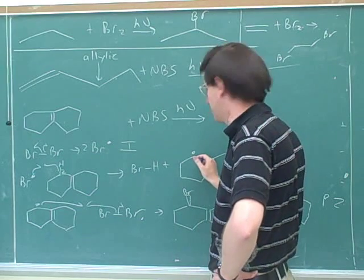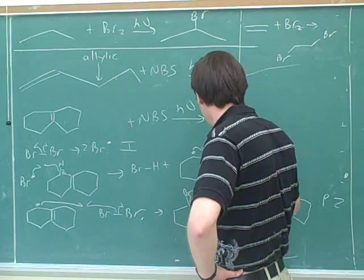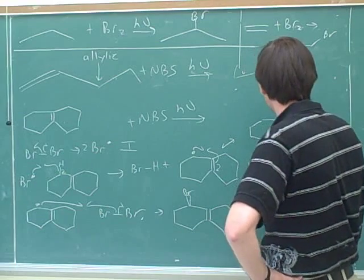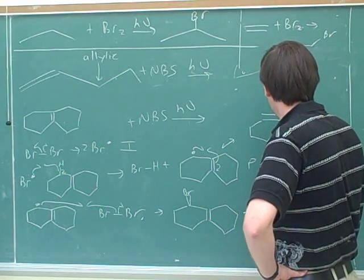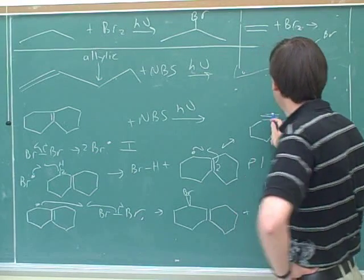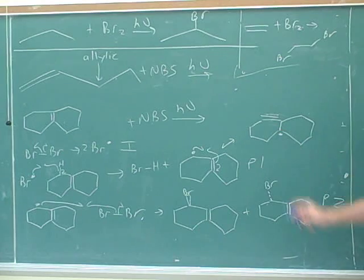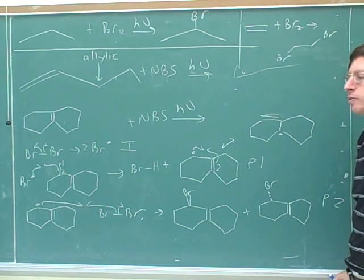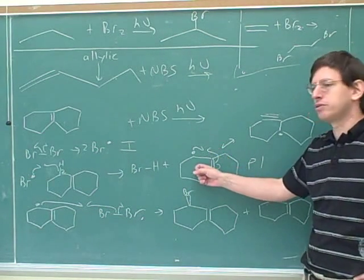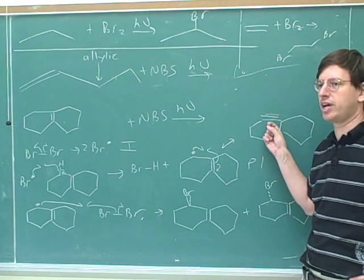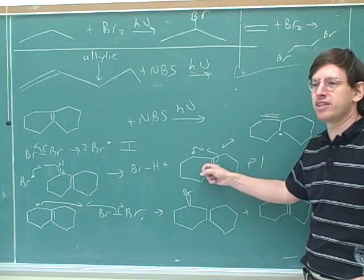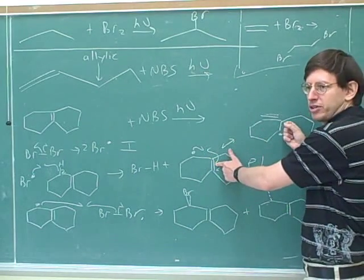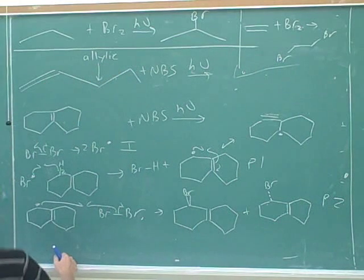Now I'm going to use electron-pushing arrows to show the other resonance structure here. Here are the electron-pushing arrows that help us show the other resonance structure. Now the double bond is up here and the unpaired electron is down here. These are definitely not equivalent to each other — there's a big difference in these two cases. You didn't have to go through the whole mechanism. If you want a shortcut, just draw the radical form of the substrate and all of its resonance structures. But you don't want to skip drawing the radical, because then you can't find the resonance structures. So you should at least draw these two pictures so you can see where the bromine is going to end up. That gives us a different propagation step.